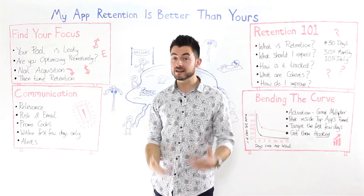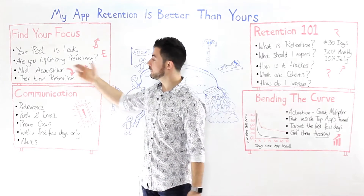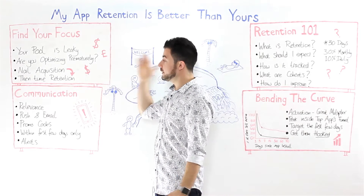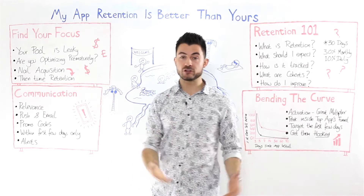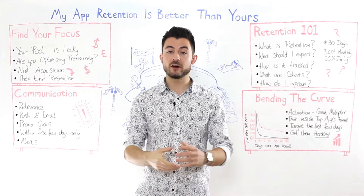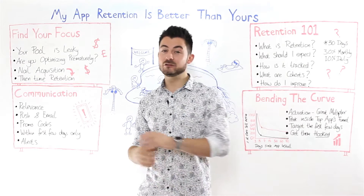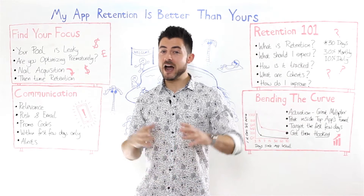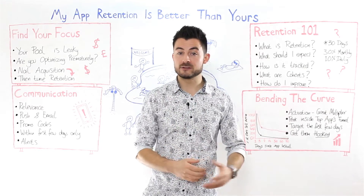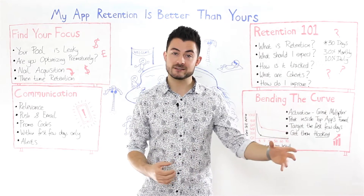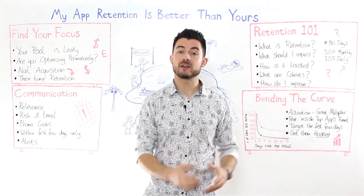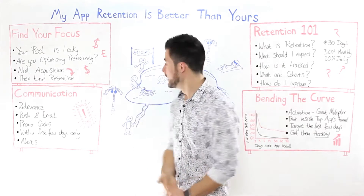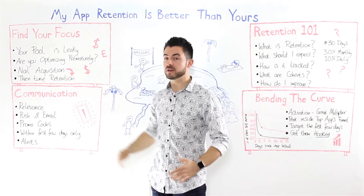Before we get into this, I want to make sure you're at the right stage to be watching this video and that you're not optimizing prematurely. At the retention stage, we need to make sure you've already acquired users. If you're an app or startup that's just launched and you have no idea what's working in terms of user acquisition — you haven't tested your channels, you don't know your metrics — I'd encourage you to go back to the user acquisition video in the mobile metrics series, experiment with that first, and then come back to retention.